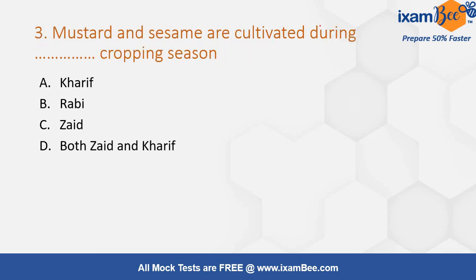Mustard and sesame are cultivated during which cropping season? Options are Kharif, Rabi, Zayad, or both Zayad and Kharif. Mustard and sesame are both Rabi crops, so the correct answer is Rabi.